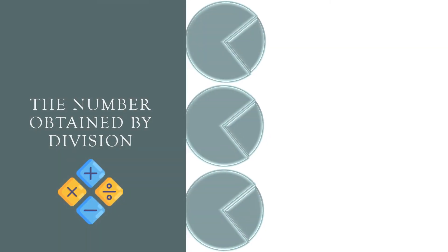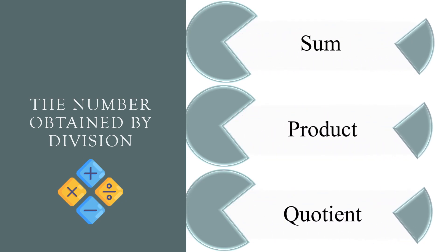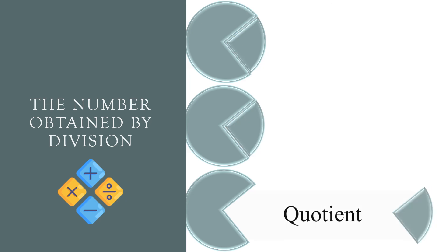The number obtained by division. Sum, product, or quotient? The correct answer is quotient.